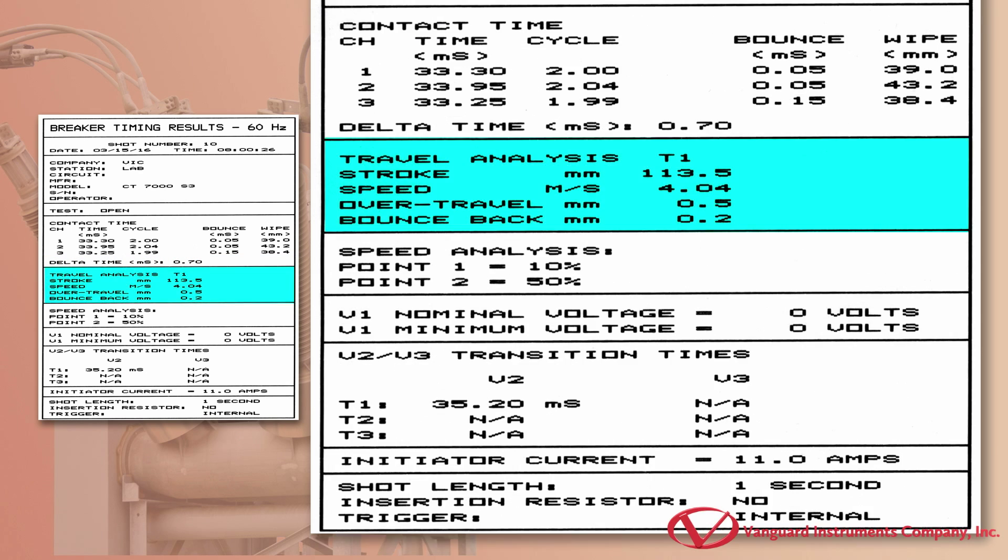The travel analysis for transducer one is shown here. The analysis comprises the breaker stroke, contact velocity, contact over travel, and contact bounce back. They can be displayed in either English or metric units.